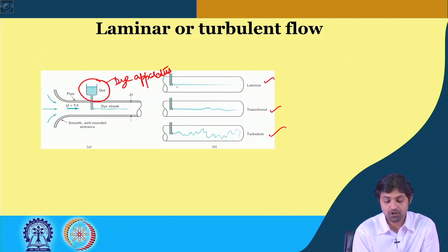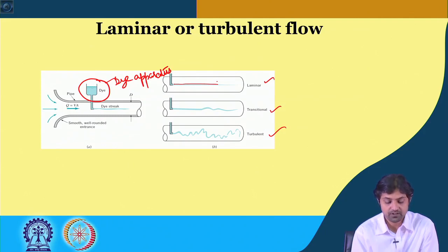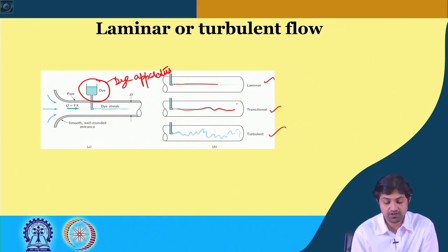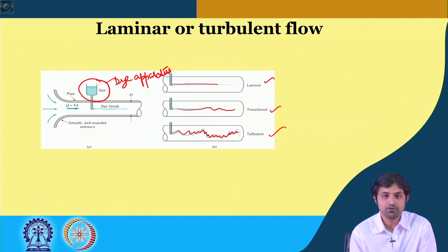If the flow velocity is less, the flow is more likely to be laminar — the dye streak will be almost like a streamline. As you keep increasing the velocity, there will be starting of some disturbance; this is transitional flow. If the velocity increases very high, the flow becomes fully turbulent with a lot of fluctuations. This experimental setup allows you to visually observe the physical difference between laminar, transitional, and turbulent flow.